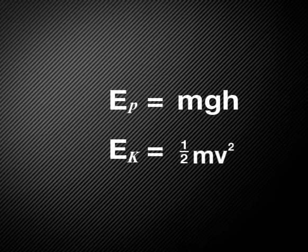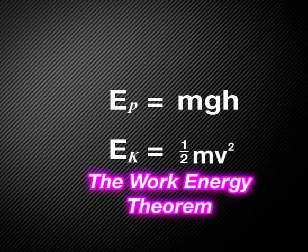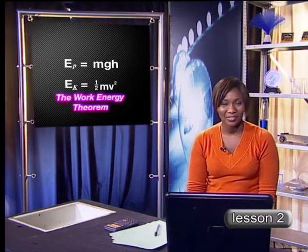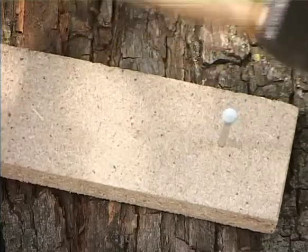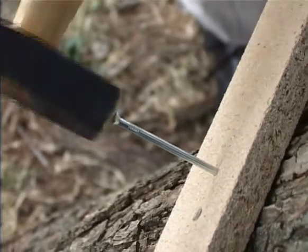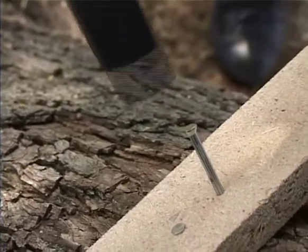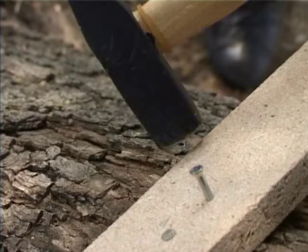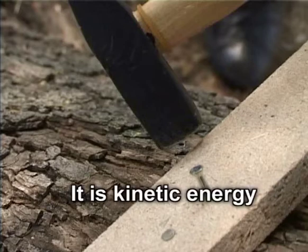Now that we have these two equations, I want us to have a look at the relationship between the change in kinetic energy and the net work done. This relationship is called the work-energy theorem. A good way to demonstrate this relationship is to look at the work done when using a hammer. When we use a hammer to knock a nail into wood, the hammer does work on the nail. We know that work is done on the nail because we can see the nail move — the hammer pushes the nail and it is displaced, moving deeper into the wood. The hammer performed this work on the nail, so the hammer must have possessed energy — it is kinetic energy.